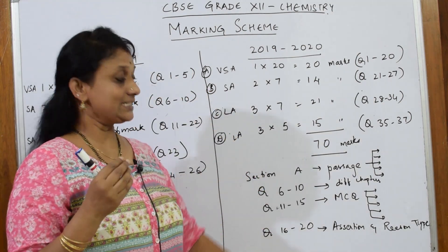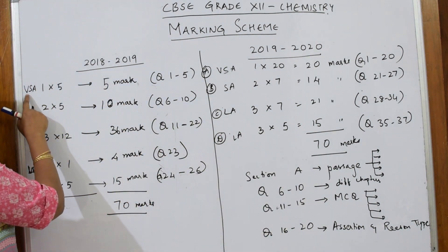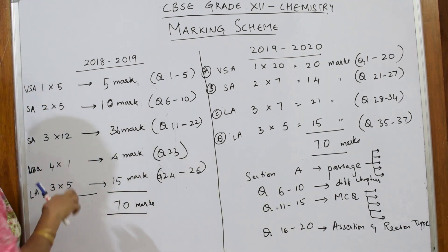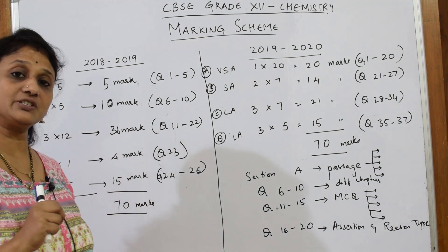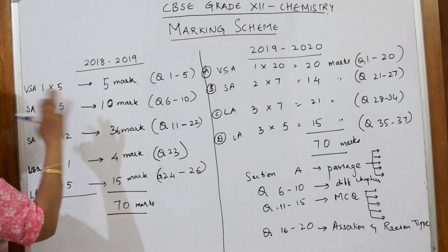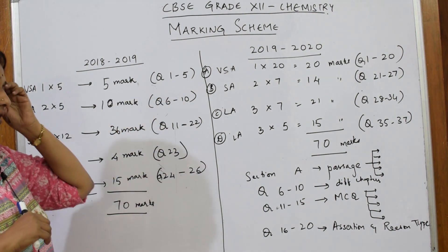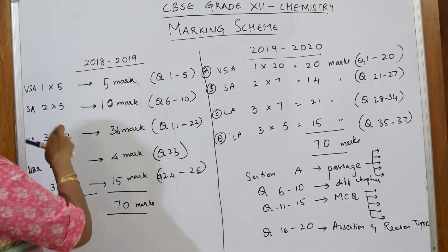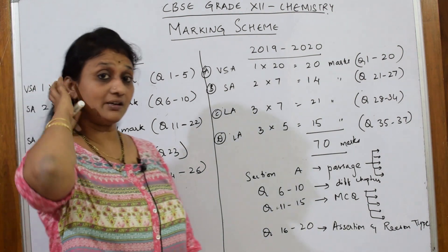Next is the short answer category. In the previous year, the short answer section carried two marks with five questions, totaling ten marks — questions six to ten were all two-mark questions.